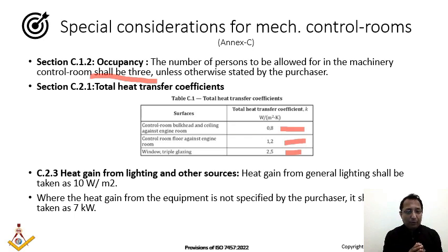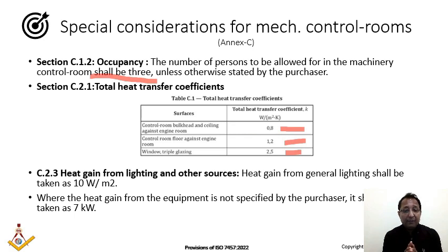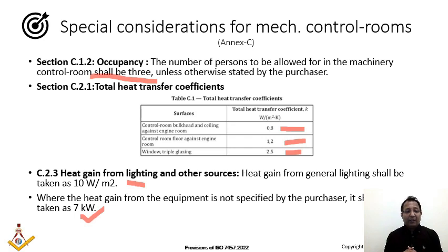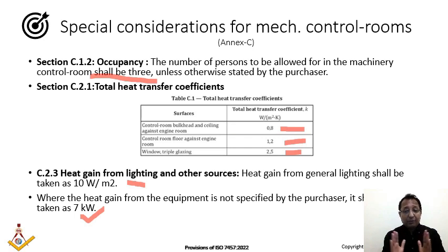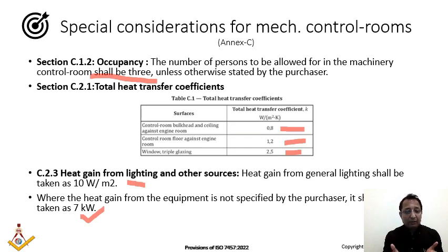Section C.2.3 covers heat gain from lighting and other sources in the machinery control room. Lighting heat gain can be taken as 10 W/m². Heat gain from equipment should be taken as 7 kW when vendor data is not yet available — this is specified in ISO 7547, so you can safely apply it in calculations and clearly document that 7 kW per ISO 7547 has been applied, avoiding delays while waiting for vendor input.